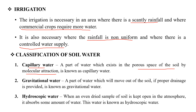The next one is gravitational water. The next one is hygroscopic water. When an oven-dried sample of soil is kept open in the atmosphere, it absorbs some amount of water. This water is known as hygroscopic water.